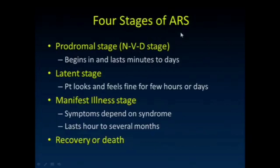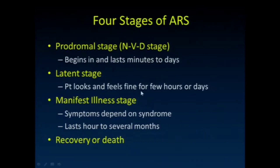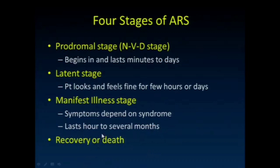Acute radiation sickness can have four stages. The prodromal stage involves nausea, vomiting, and diarrhea, lasting minutes to days depending on exposure level. Many have a latent period where the patient feels a little better — that may last a few hours for cerebrovascular syndrome or days for GI or hematopoietic syndrome. Then there is a manifest illness stage with symptoms depending on which syndrome, lasting hours to several months. Recovery is almost only seen with the hematopoietic syndrome.